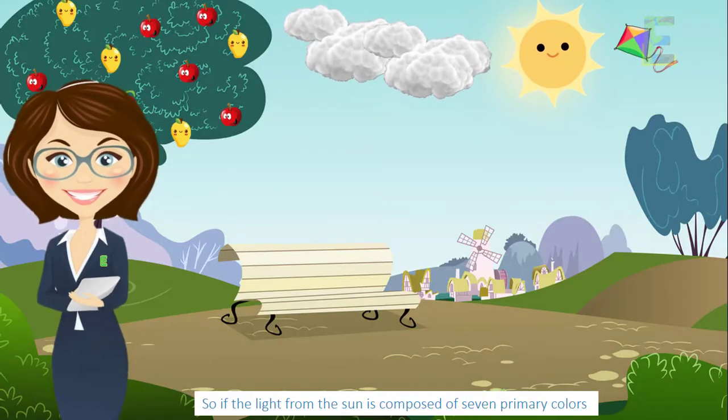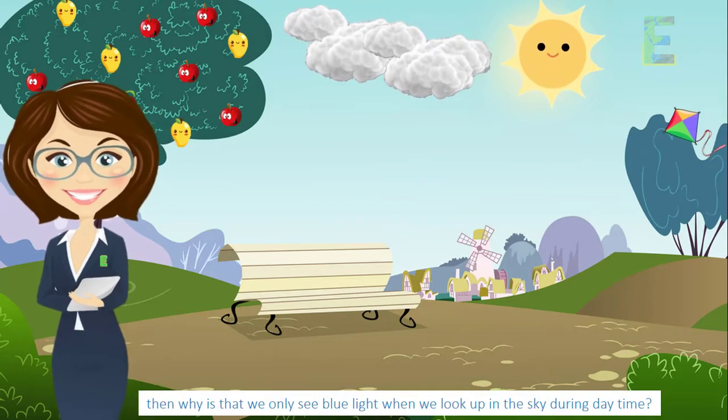So if the light from the sun is composed of seven primary colors, then why is that we only see blue light when we look up in the sky during daytime?